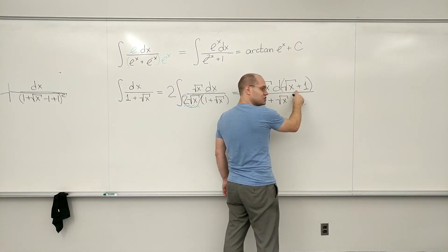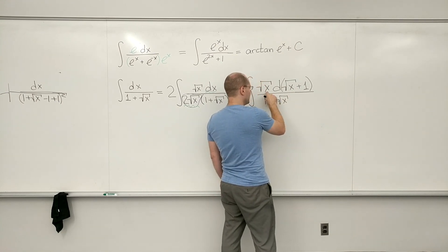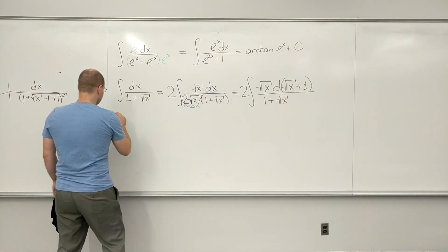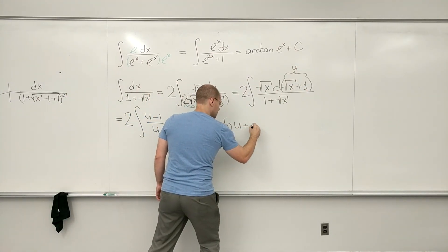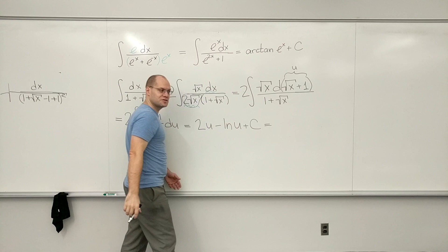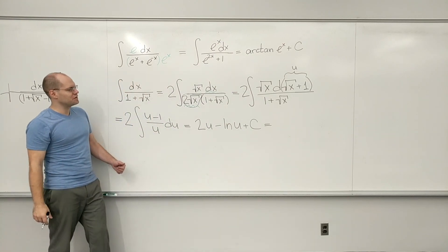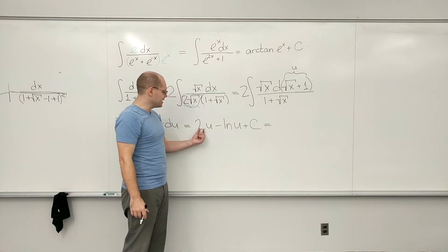Right, so now this is u, this is u prime, and this is u minus 1. Equals, I'm just going to write it out. Plug square root of X plus 1 back into u and absorb the constant of 2 into C.